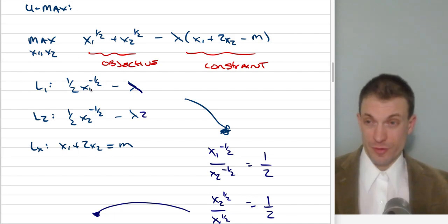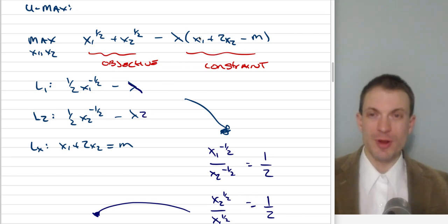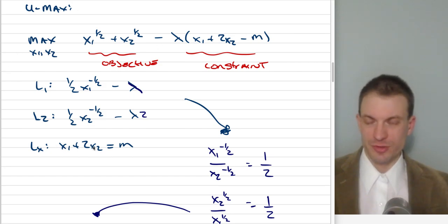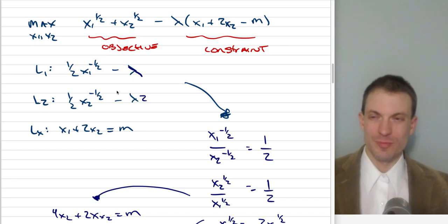Let's walk through these partials. The partial with respect to good one is going to be one-half x₁ to the minus one-half minus lambda. The partial with respect to good two is one-half x₂ to the minus one-half minus two lambda, because the price of good one is one and the price of good two is two. The constraint is x₁ plus 2x₂ equals m. This gives us our MRS — marginal utility of one over marginal utility of two — equal to the price ratio of one-half.